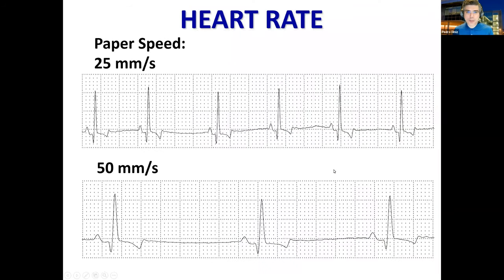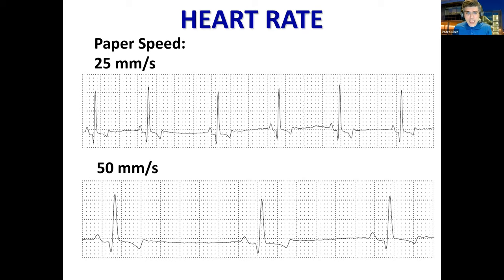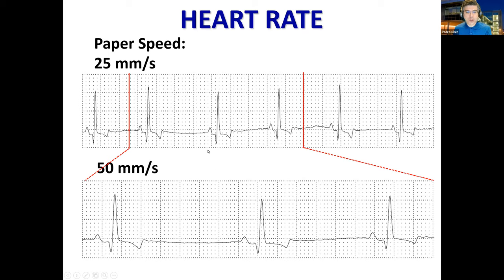In terms of paper speeds in small animals, there are two main types we use — even for computer-based ECGs. One is at 25 millimeters per second, and one at 50 millimeters per second. The difference is that 50 millimeters per second spreads the ECG across a larger area, making it easier to measure the width of waves. But it's very common to use 25 millimeters per second for dogs and cats.